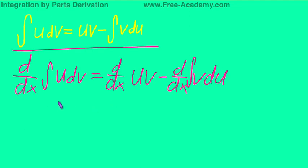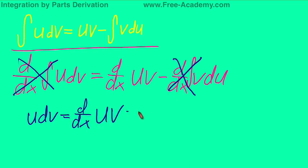Now remember from our integration rules lecture that whenever we take the derivative of the integral we get back the original function. So we get to cancel out the derivative and the integral signs, which is going to give us Udv equals the derivative of Uv minus Vdu.